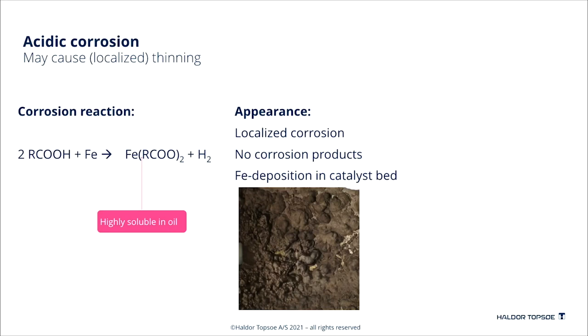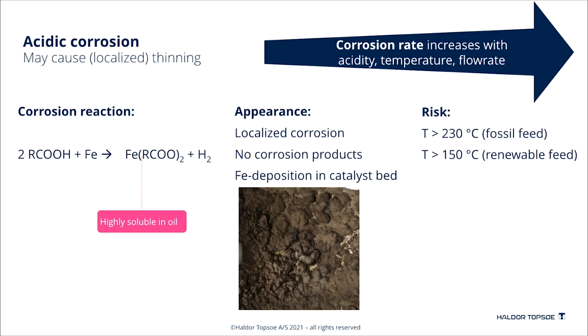The risk of this kind of corrosion occurs from 230 degrees C in fossil feed. But because we have much higher acidity and different molecules, it is considered a risk already from 150 degrees C in renewable feeds. The risk of corrosion increases with acidity, temperature and flow rate.